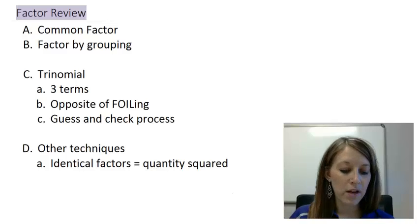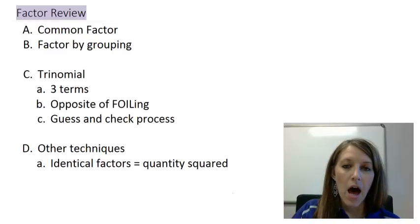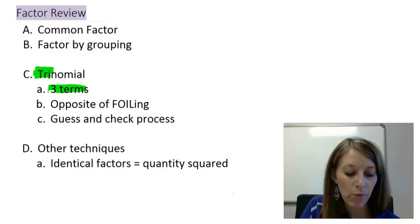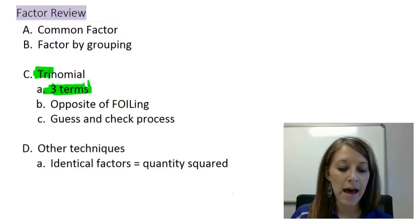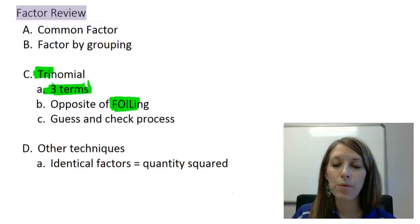Our last couple of videos were over factoring by trinomial. We know that it's going to be a trinomial. The prefix tri means that we have three terms involved. This is the exact opposite of foiling. Foiling means we're multiplying out two termed polynomials, so a binomial times a binomial. And that's the way that I've taught you to factor this trinomial process. You do the opposite of foiling or sometimes you might hear me call this unfoiling.